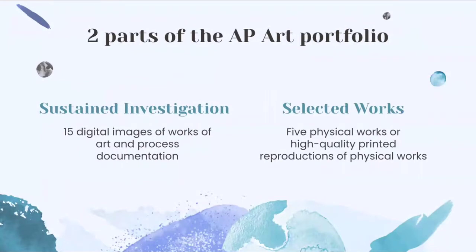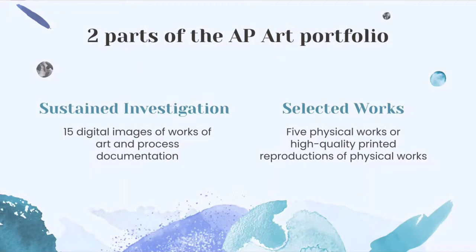There are two parts of the AP Art portfolio. One is Sustained Investigation and another is Selected Works. Sustained Investigation will be 15 digital images of artworks and process documentation. It doesn't have to be 15 completed, high-quality artworks — you can submit some of your process of getting to that high quality artwork. You have to describe how your sustained investigation shows evidence of your practice, experimentation, and revision guided by your questions. Selected Works will be 5 physical works or high-quality printed reproductions of physical works, and you have to pick 5 high-quality artworks to submit. From your 15 images, you can pick 5 of them.